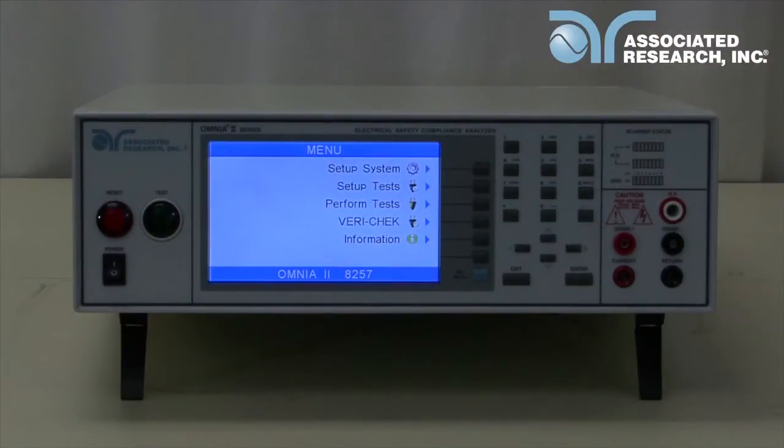The Omnia 8207 and 8257 have a built-in internal 500VA power source, so an external source is not necessary.